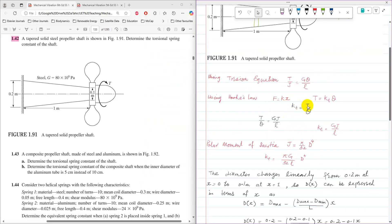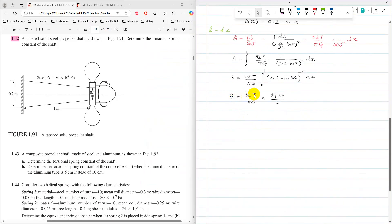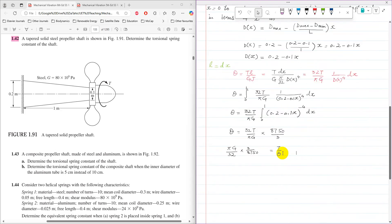Now KT equals T over theta, so this expression now can be rearranged to get T over theta. So that is the rearrangement: theta equals pi G over 32 into 3 into 8750.